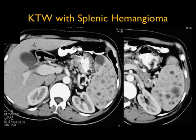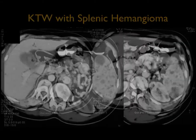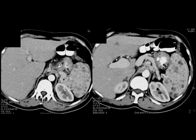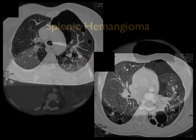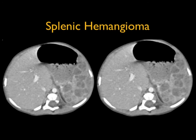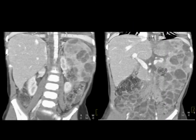Things like Klippel-Trenaunay-Weber, as in this case, can have multiple hemangiomas. The patients get cystic changes in the lung and spontaneous pneumothorax. You can also see splenic hemangiomas in another example of Klippel-Trenaunay-Weber where they replace a significant portion of the splenic gland — very minimal normal tissue is seen in this case, shown here on the coronal view.